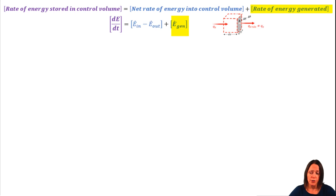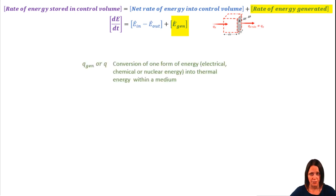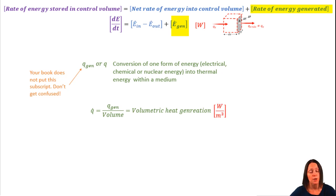We're now on the third and final term in the energy balance, the rate of energy generation. Now, in your book, they don't always put a subscript G-E-N, gen, when referring to the rate of energy generation. So just be aware of that. This term, like the other terms in your energy balance, is in watts. You'll often see this expressed as a volumetric heat generation term, which is also in watts per unit volume.